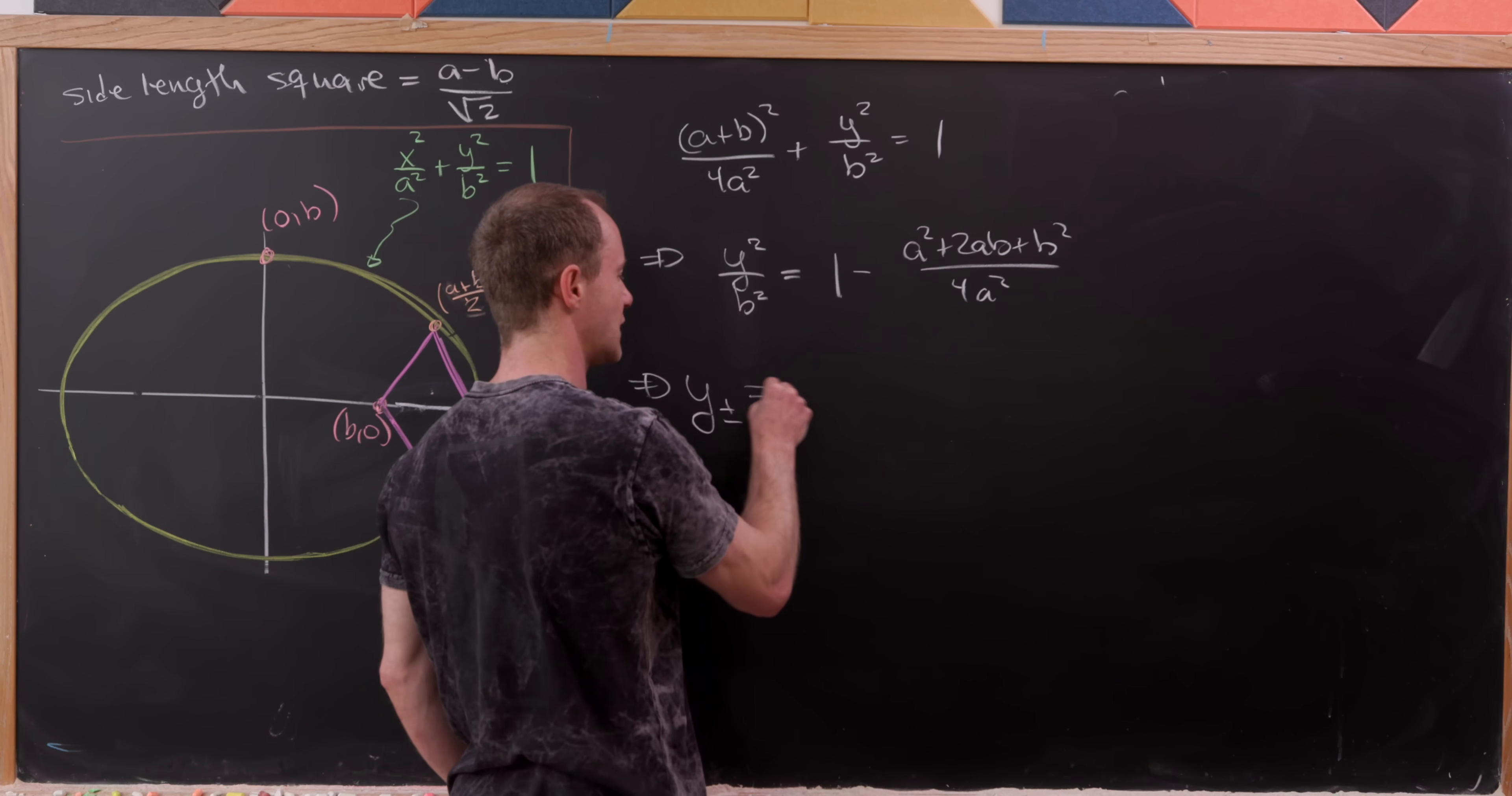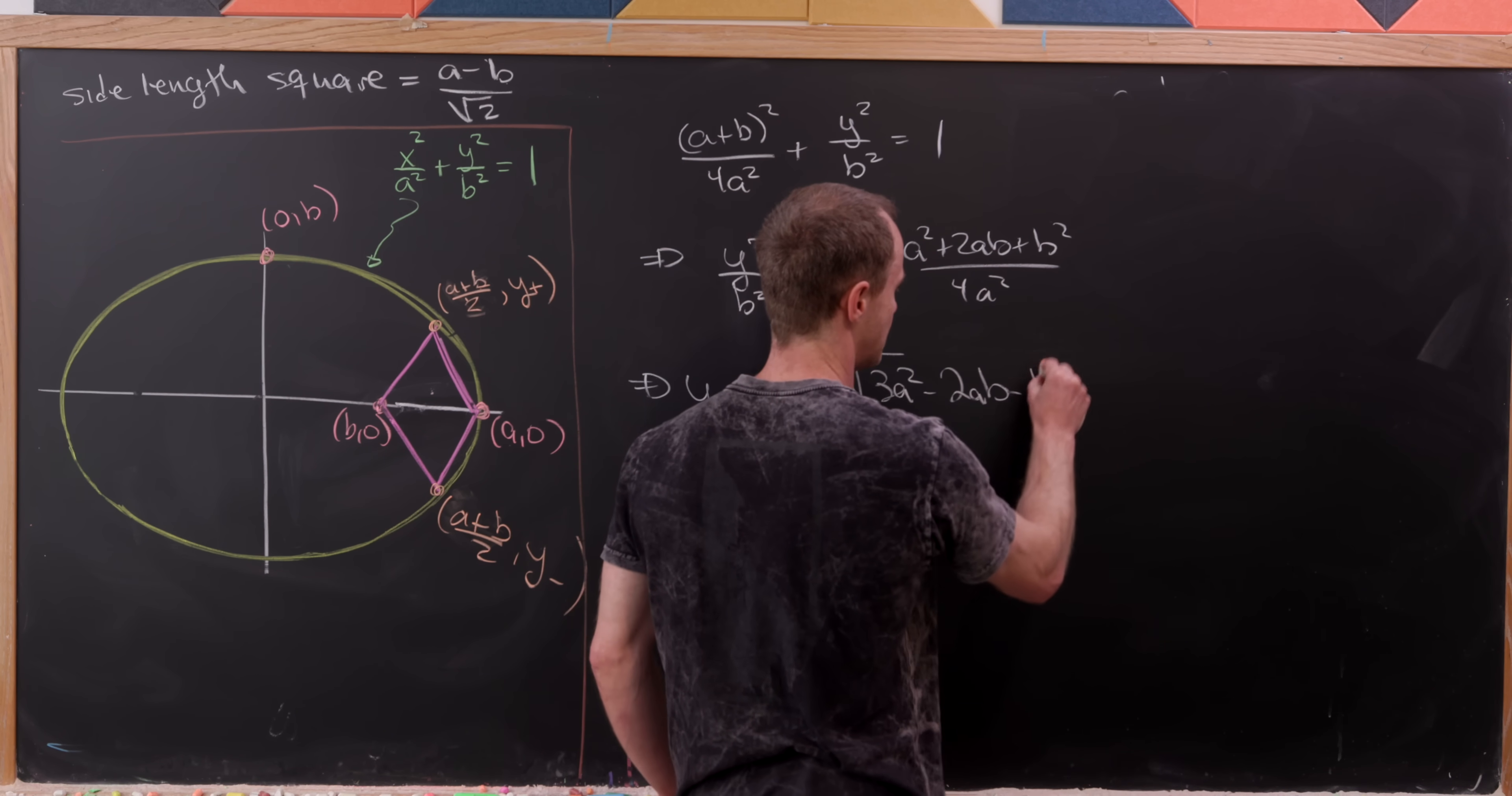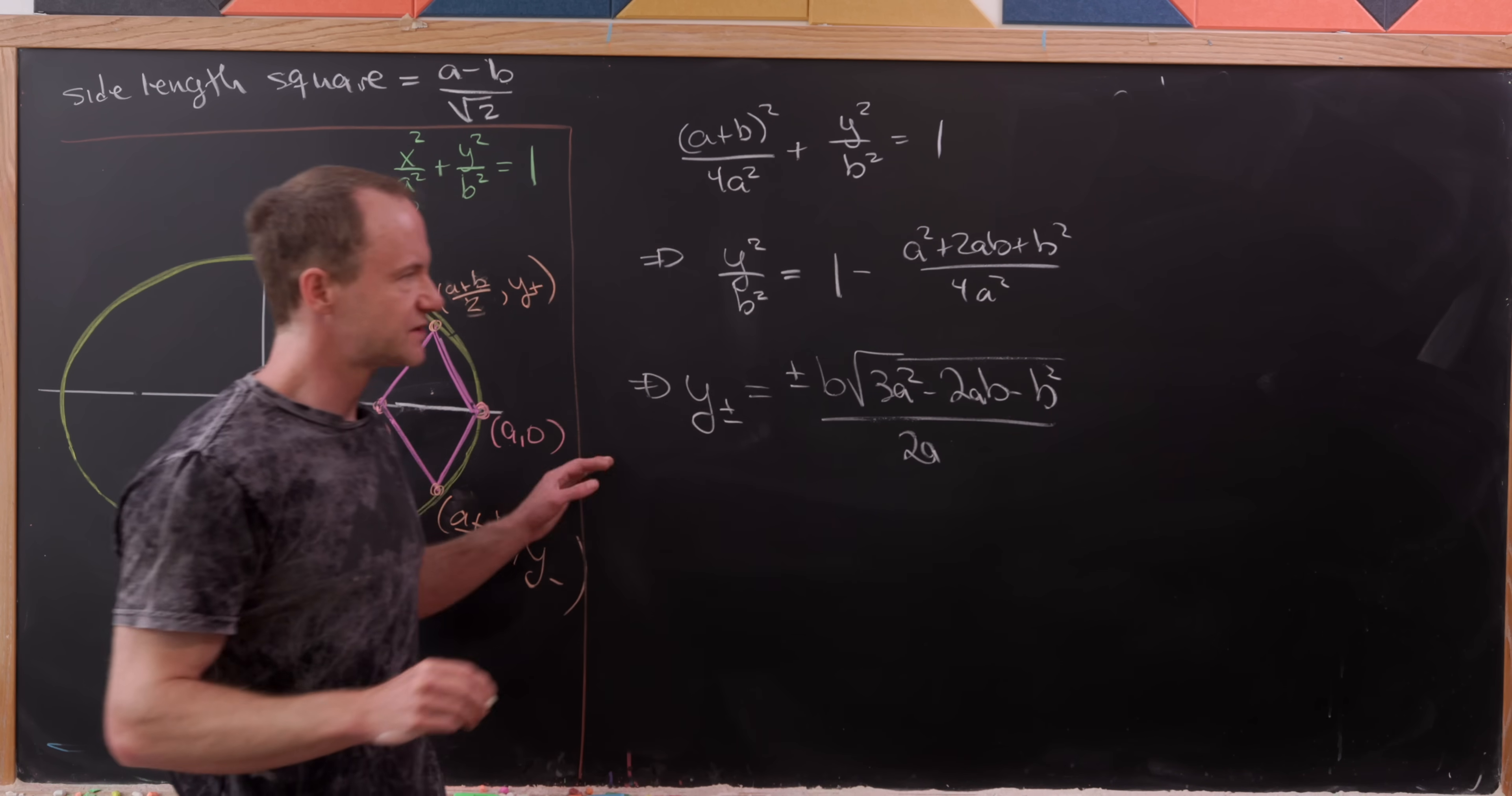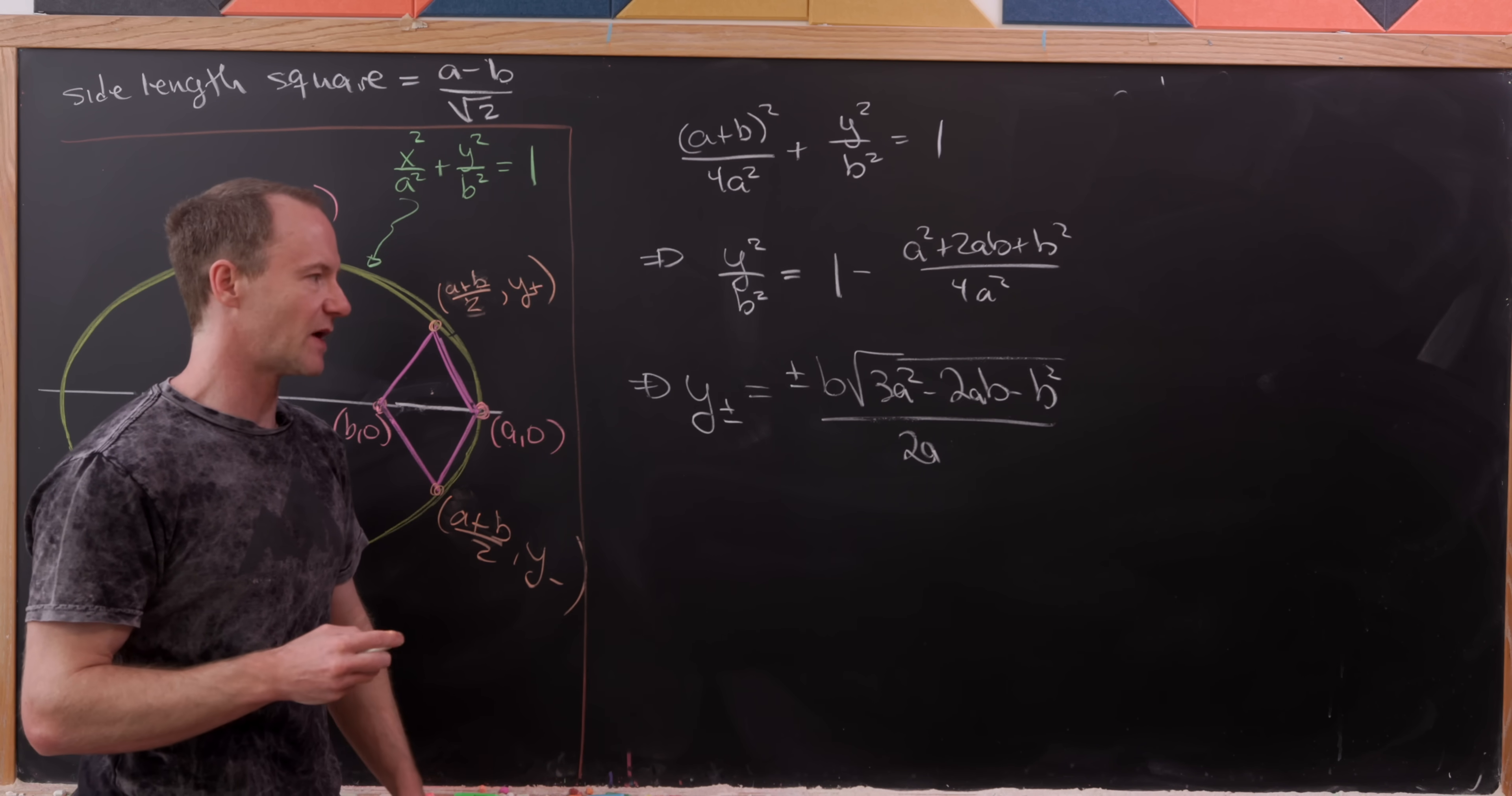And that'll give us y± = ±b√(3a² - 2ab - b²)/(2a). So that's just a straightforward calculation solving the above equation for y² and then taking the positive and negative square root.